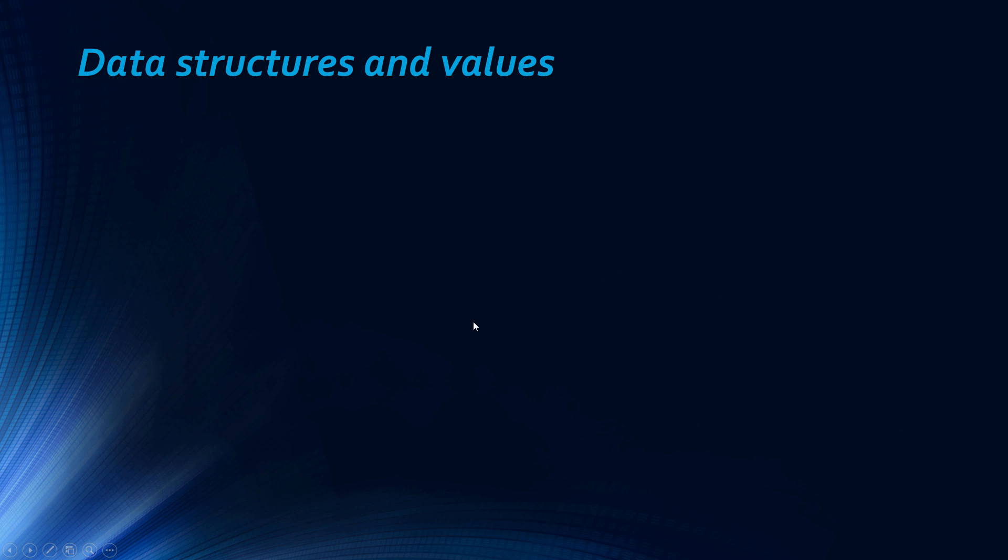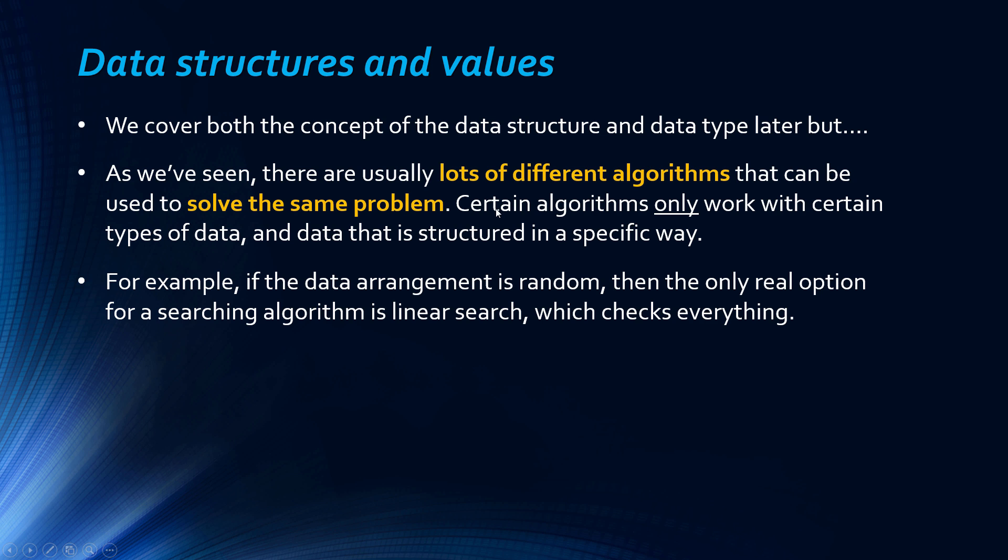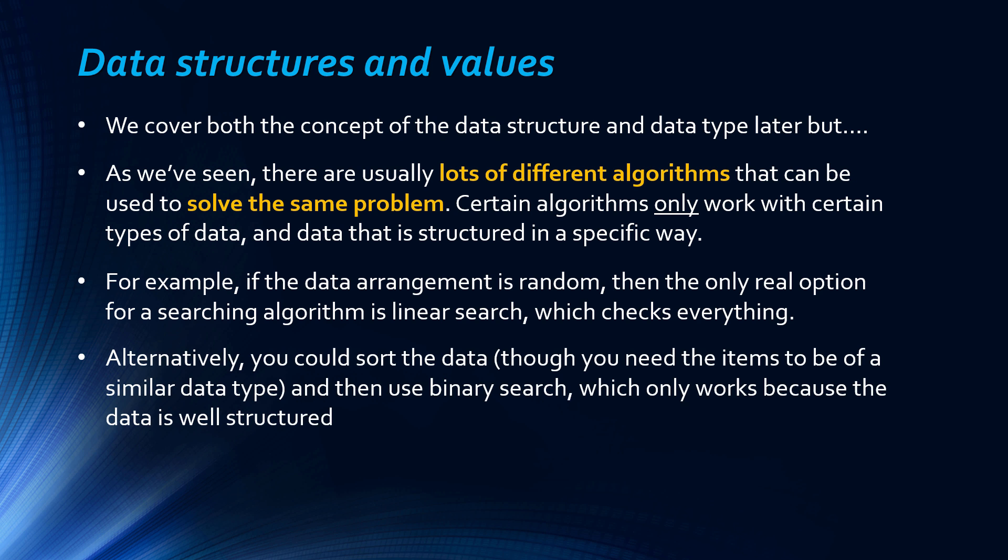But we move on to actually a final kind of theoretical point, and that's on data structures. So this is slightly difficult, as I say, we cover the data type later, and also data structure too. But as we've looked at, there's lots of different algorithms that can be used to solve the same problem. We looked at a couple of sorting ones, we looked at some searching ones, and we looked at a few different ones to do with arithmetic. And so certain algorithms only work with certain types of data. So some will only work with integers, some will only work with letters, potentially, and more so the case for data that has to be structured in a certain way. So for example, if the data arrangement is random and not sorted, then really for a searching algorithm, you have to do linear search, which as we know, checks everything. So it's not the best option, but you may be left with no other choice if you're not willing to sort it first. So yeah, you could sort the data, although you often need the items to be of either the same or a similar data type, especially if you're doing it with a computer. And then you can maybe use something like binary search, which only works because it's well structured and sorted.